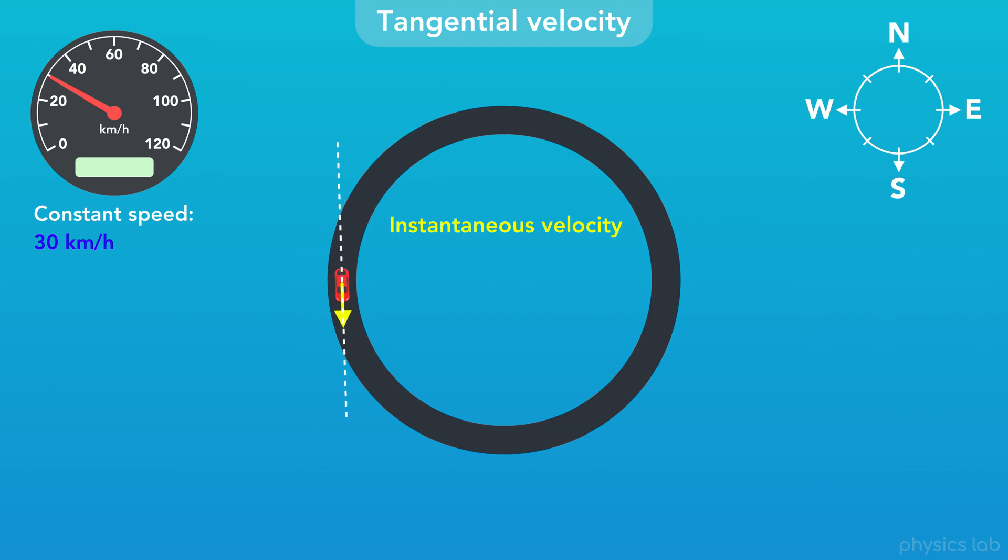Let's use a compass to help us describe it. If we pause time when the car is here, what direction is the car moving? At this moment, the car is moving upwards, which is north. So the car's velocity, at this instant, is 30 km per hour north.